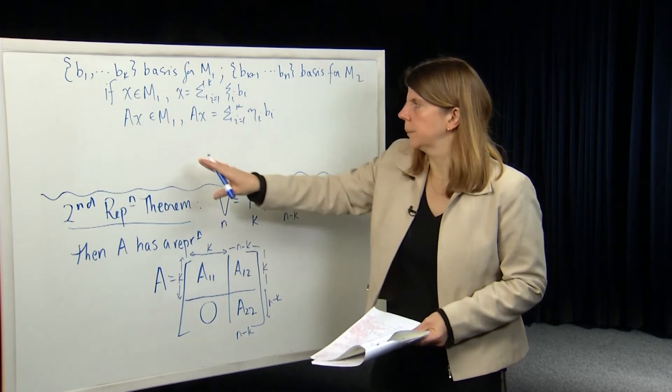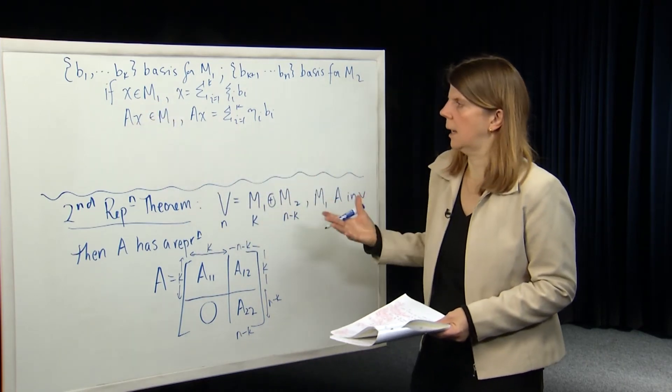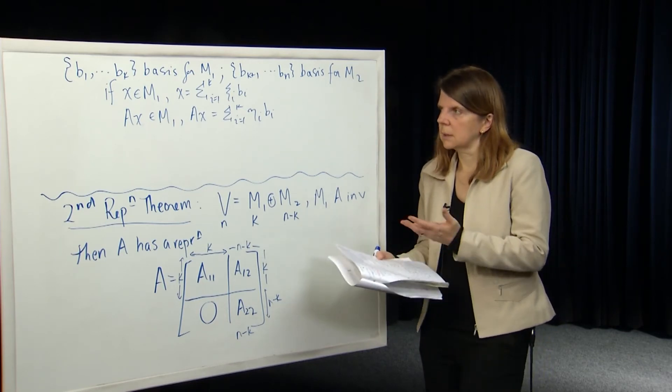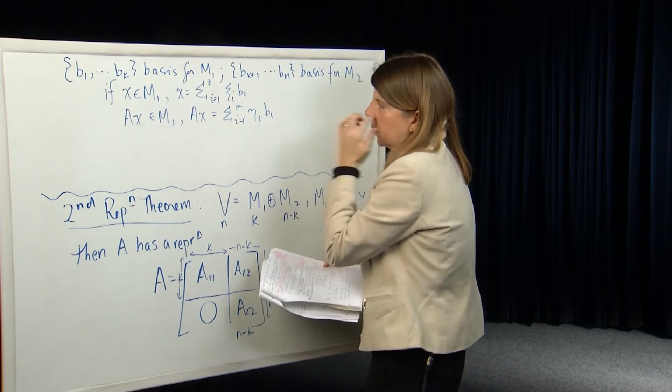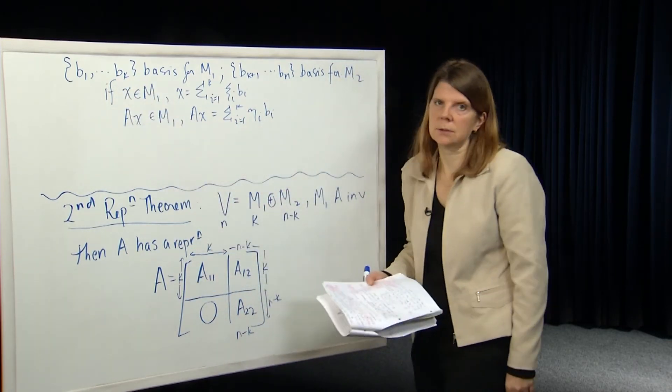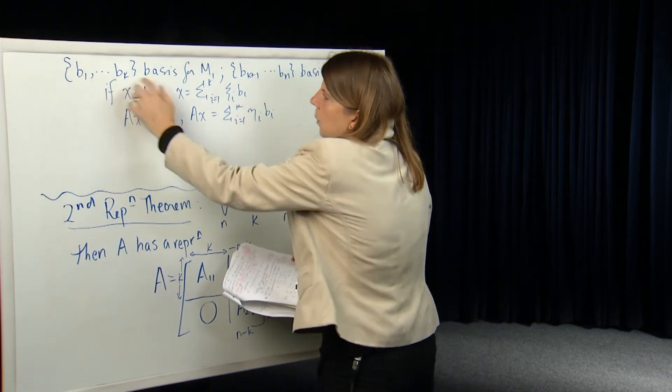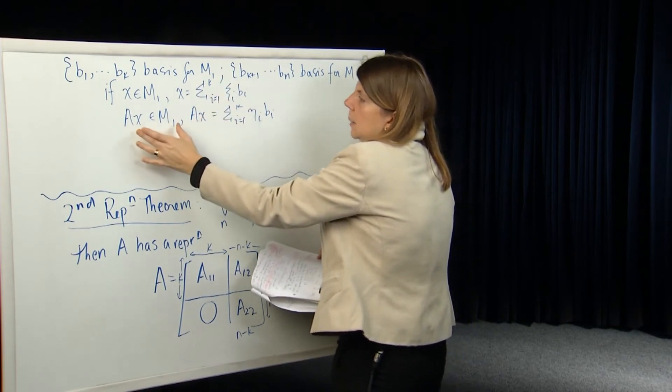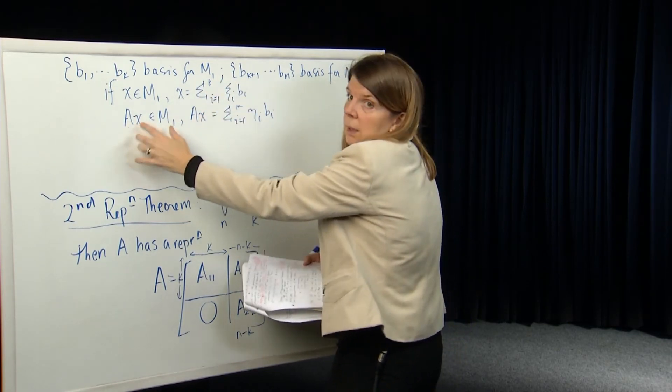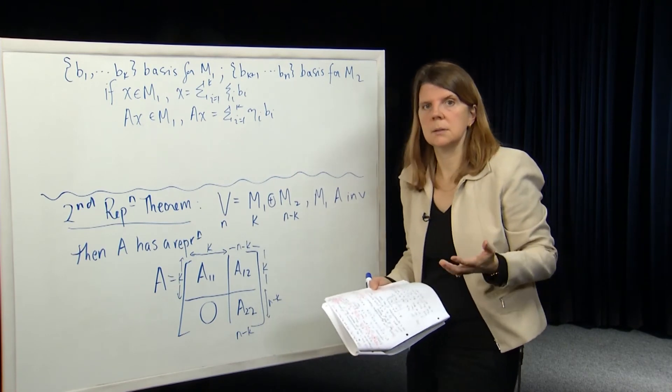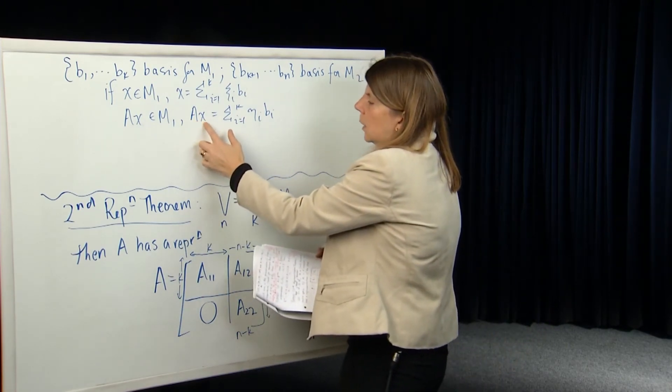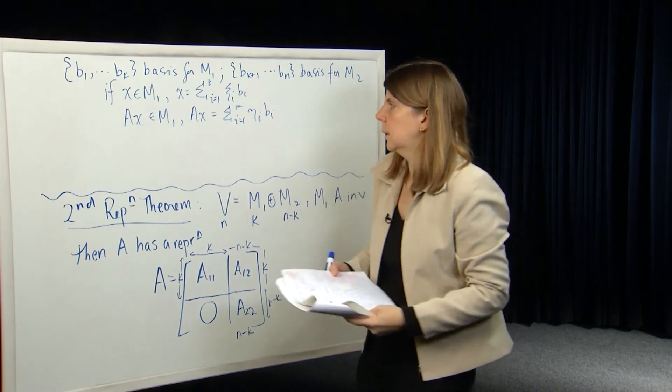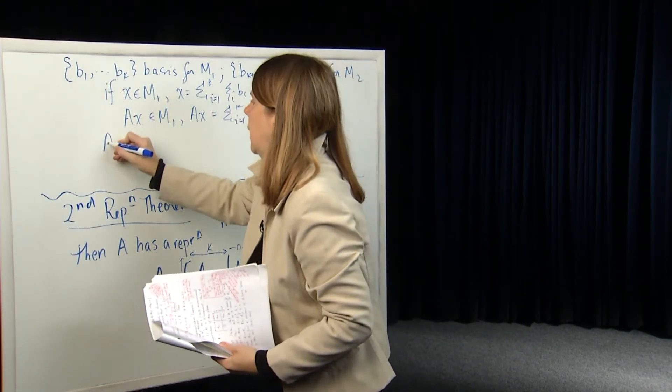So because M1 is A-invariant, we know that AX also belongs to M1, so it can be written as a linear combination of the basis elements. So basically this property holds for, if we chose X to be any of the basis vectors in M1. So B1 is in M1, it's a basis vector. But in particular, AB1 also belongs in M1 because M1 is A-invariant. So AB1 can be written as a linear combination of the basis vectors in M1 only.